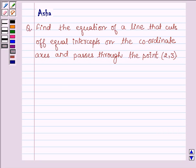Hello and welcome to the session. Let us solve the following question which says find the equation of a line that cuts off equal intercepts on the coordinate axis and passes through the point 2, 3.